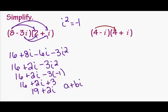So I'm going to take my first, 4 times 4 is 16. My outside, 4 times i, which is 4i. My insides, negative i times 4, is negative 4i. And my last, negative i times positive i, is negative i squared.